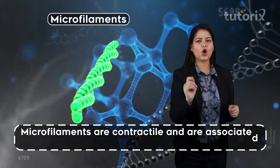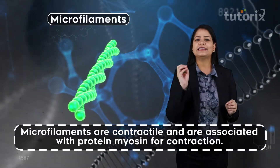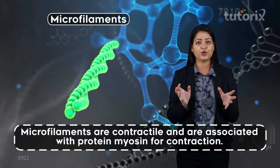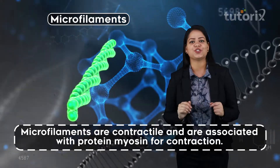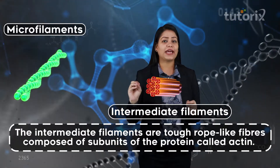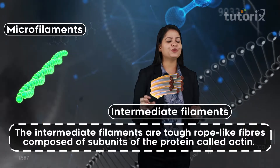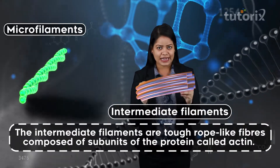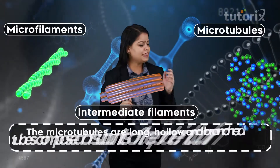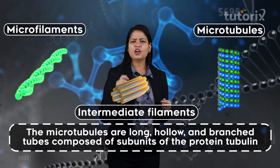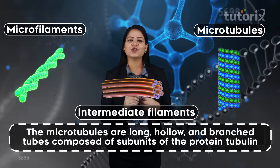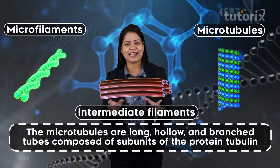The microfilaments are contractile — they are capable of producing contractions and are found closely associated with the protein myosin for producing these contractions. The intermediate filaments are tough rope-like structures made up of subunits of the protein actin, and they are capable of producing a branched network as well. The microtubules are long hollow tubes made up of the protein tubulin, also capable of producing a network inside the cell.